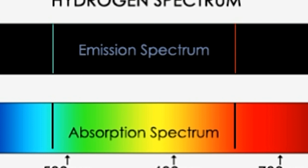Both absorption and emission spectroscopy are exact opposites of each other. Since the electronic configurations of elements are different, the spectrum values of these elements will be their atomic fingerprint — that is, it will be unique to each element. It is said that absorption spectrum is the photographic negative of emission spectrum, because the wavelengths that are missing in the absorption spectrum are seen in the emission spectrum.